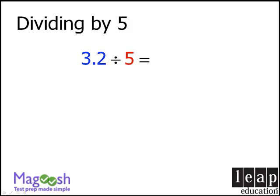Our first step will be to take our dividend of 3.2 and double it to get 6.4. Our next step will be to take our decimal point and move it one space to the left to get 0.64.